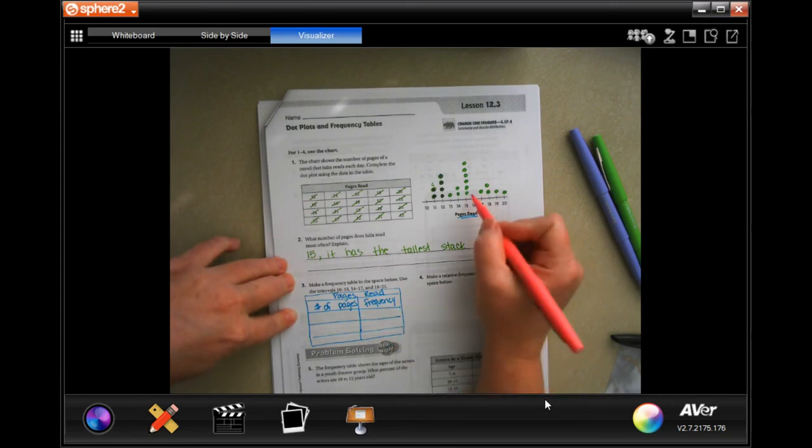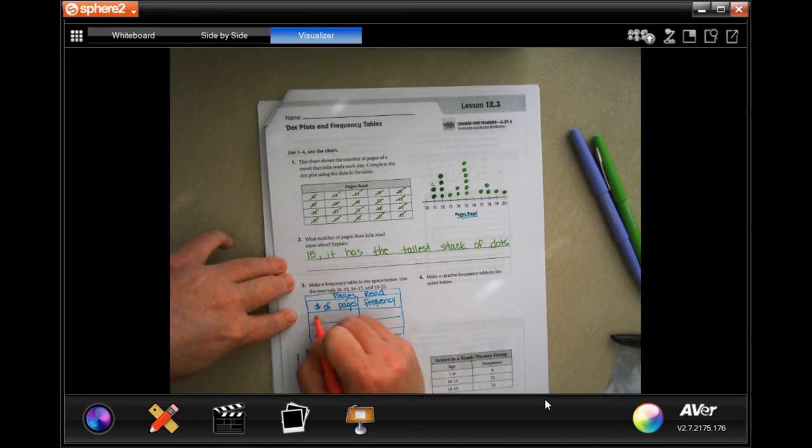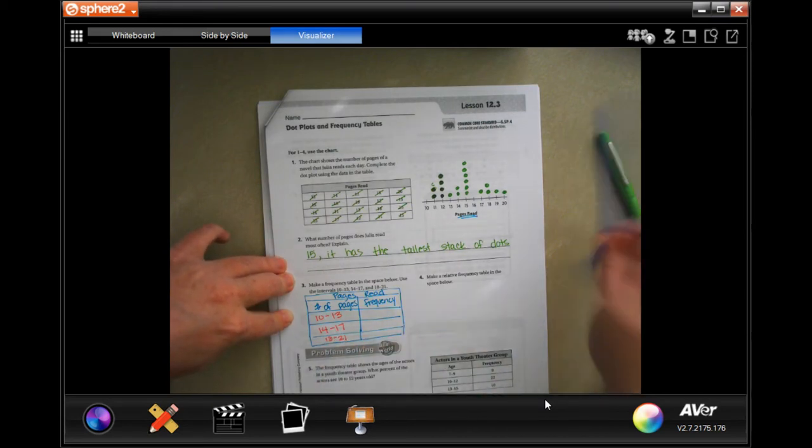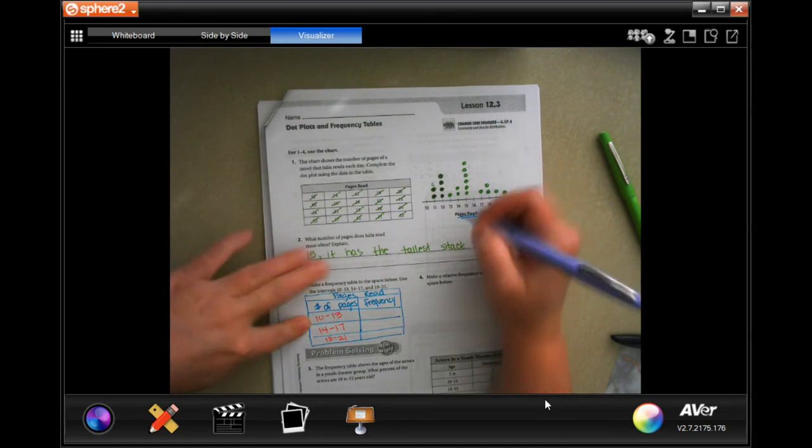Now, frequency is just how many dots there are. The number of pages is going to be, it says to do one that is 10 to 13, one that is 14 to 17, and one that is 18 to 21. So now we just have to count how many are in that group.